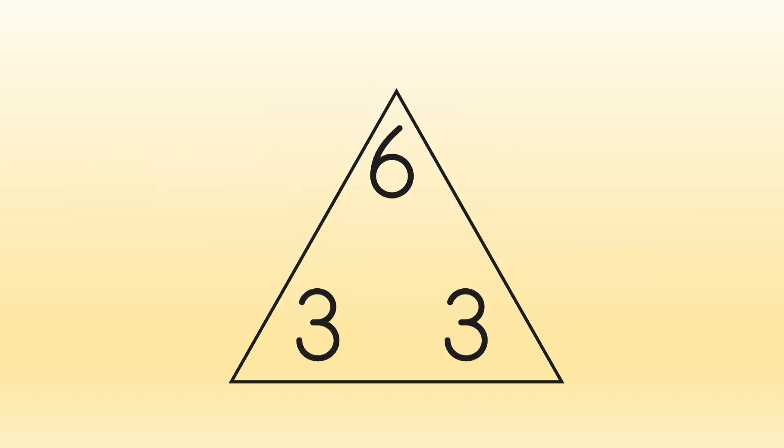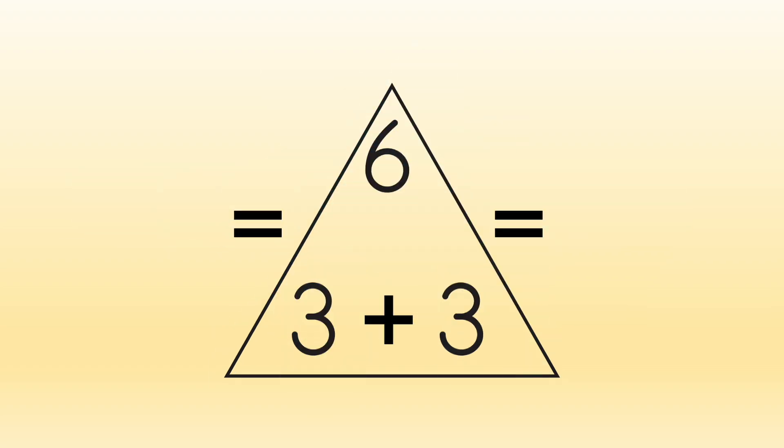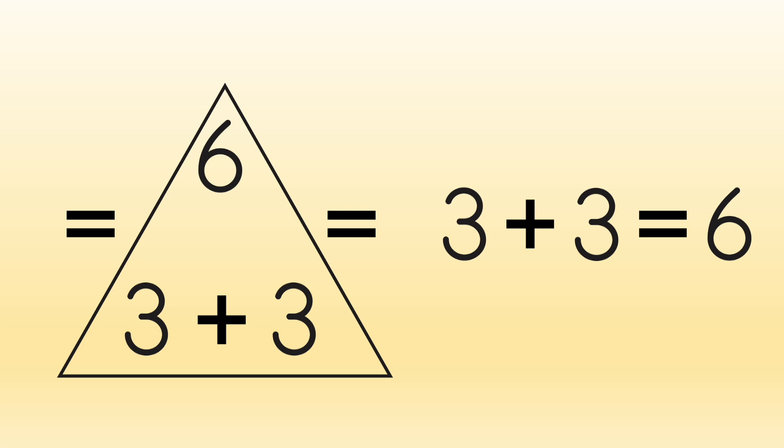When you start at the bottom, go over and up, you get addition facts. Like this. 3 plus 3 equals 6. We can see that both addition facts are the same, so we will only list it once. 3 plus 3 equals 6.